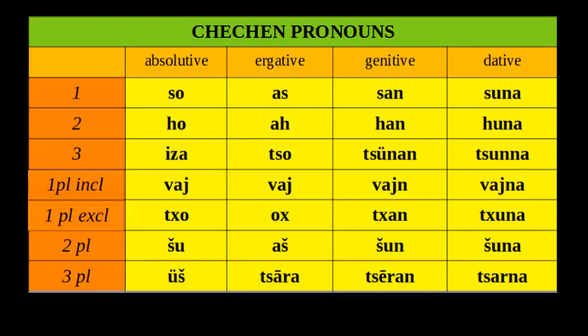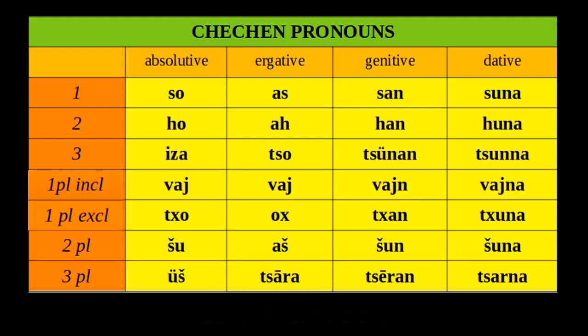Here we see the pronoun system in Chechen — I'm showing only the four main cases, though there are a total of 10 cases in Chechen, plus sub-cases within the locative. The two main cases are the absolutive and ergative, because Chechen is an ergative language. The basic case is called absolutive — not nominative, though some grammars call it that. The absolutive case is used as the subject of intransitive and linking verbs.